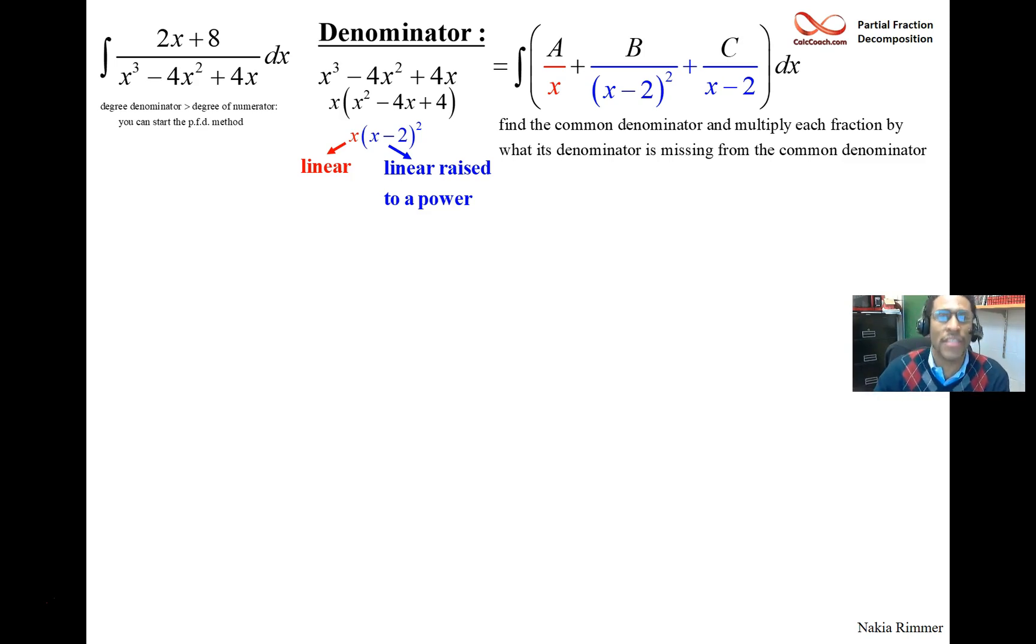Multiply by what you're missing from the common denominator. So the first fraction A over x is missing the quantity of x minus 2 squared. The second fraction already has the quantity of x minus 2 squared, so it's missing the x. Now it's this third fraction that you got to be careful with. It's missing not just the x factor in the denominator; another factor of x minus 2 is also missing, so you need to multiply by an x and an x minus 2 on that third fraction.